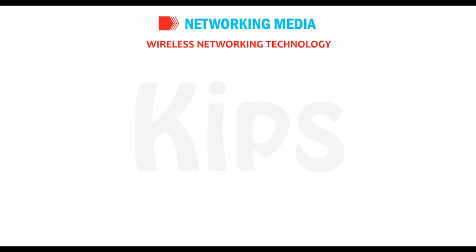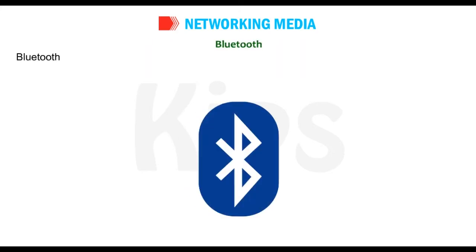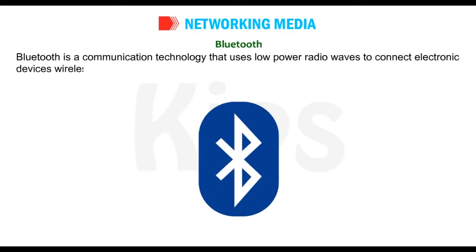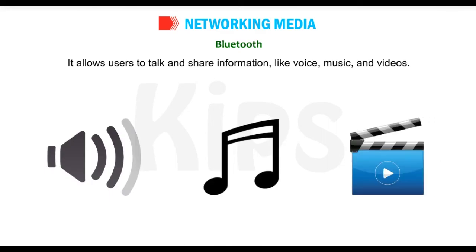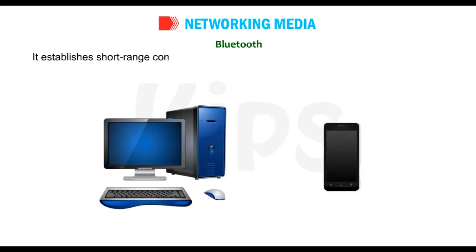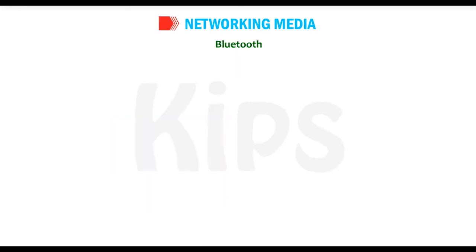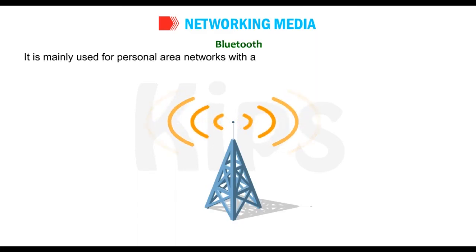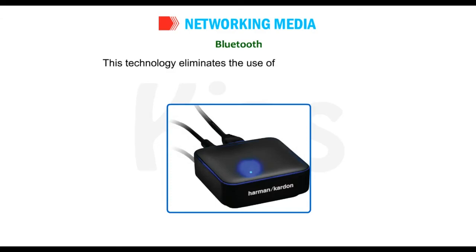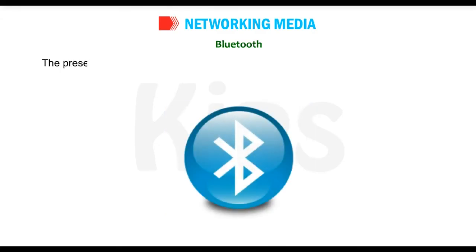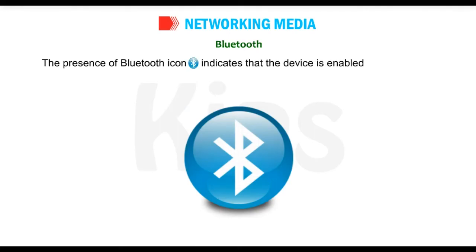Wireless Networking Technology — Bluetooth: Bluetooth is a communication technology that uses low-power radio waves to connect electronic devices wirelessly. It allows users to talk and share information like voice, music and videos. It establishes short-range communication between phones, computers and other network devices. It is mainly used for personal area networks with a maximum transmission range of up to 240 meters, depending on the Bluetooth version in use. This technology eliminates the use of cables and adapters.